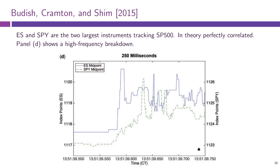If you think that ES is currently overvalued compared to SPY, you should sell ES because it's too expensive and buy SPY because it's cheap, and then when the prices realign again you can close the position. So this is arbitrage — these are arbitrage opportunities.